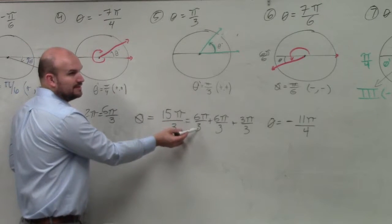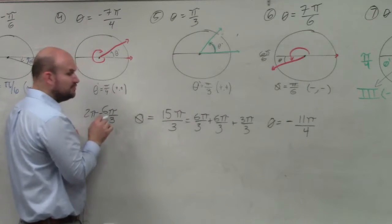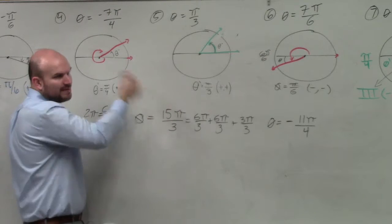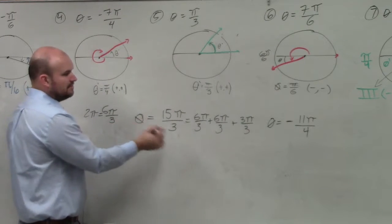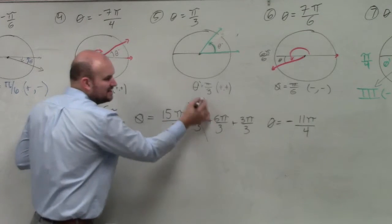Because what's 6 divided by 3? 2 pi. Well, 2 pi is, remember what I did over there? 2 pi is just a revolution around the circle. Does that make sense?